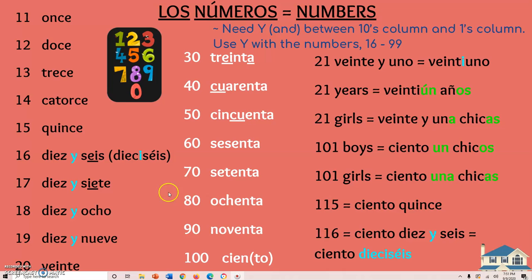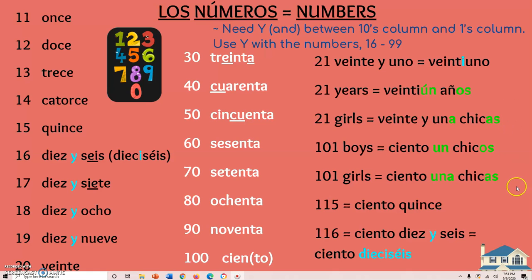Now I want you to notice: just like we talked about, when you have twenty-one years, or twenty-one girls, or a hundred-one boys, the uno can drop the O in front of a masculine noun. You say veintiún chicos, ciento un chicos. And when it's a feminine noun like chicas, the uno becomes una. So twenty-one girls is veintiuna chicas, and a hundred-one girls is ciento una chicas.